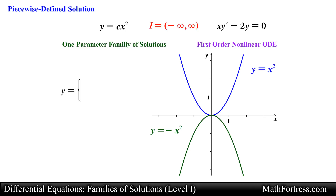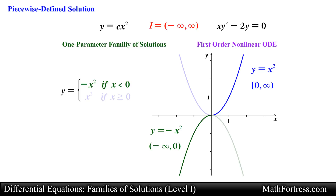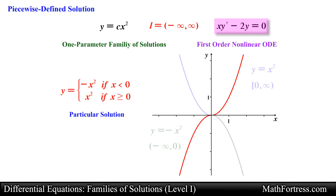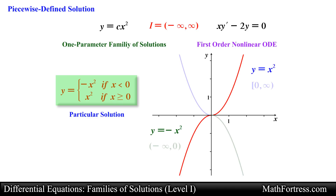It turns out that we can actually construct a solution by using parts of each particular solution. We can use the function y equals negative x squared from negative infinity to 0 exclusive — in other words, where x is less than 0 — in combination with the function y equals x squared from 0 inclusive to positive infinity — where x is greater than or equal to 0. This piecewise defined function can be considered a particular solution to the differential equation, and it is different from both y equals x squared and y equals negative x squared. Notice that this piecewise defined function cannot be obtained from the family y equals cx squared by a single choice of the parameter c.